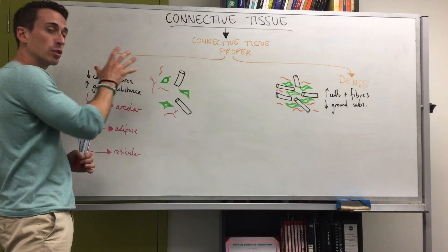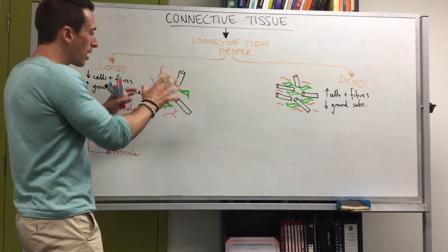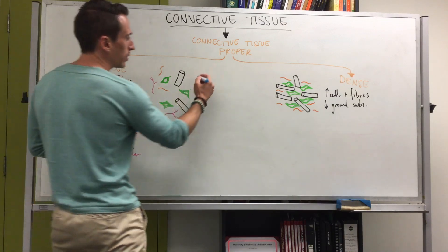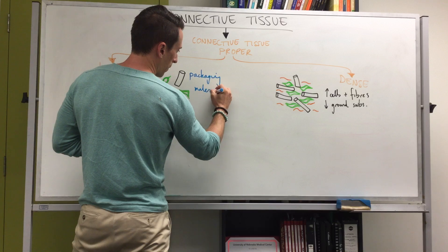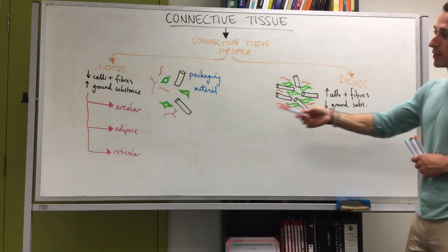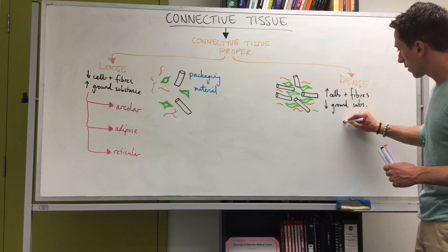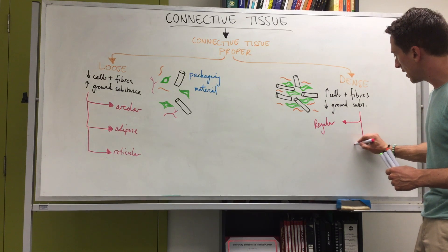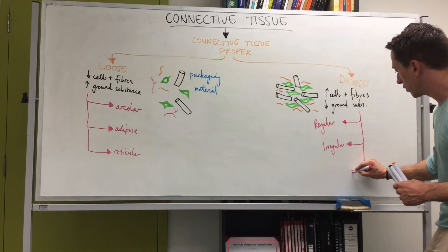So that is loose connective tissue: less cells and fibers, more ground substance, with a loose arrangement — think of it as the packaging material of the body. Dense connective tissue also has three subcategories: dense regular, dense irregular, and elastic.